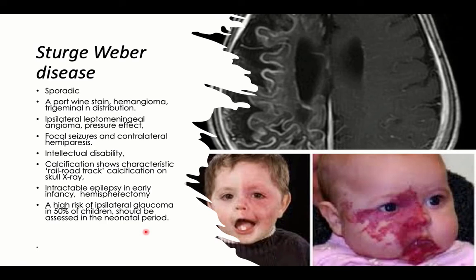The third neurocutaneous syndrome is Sturge-Weber disease, which is sporadic, not hereditary. It is usually suspected when finding a capillary hemangioma — called a port wine stain — present in the distribution of the trigeminal nerve. Once you find this capillary hemangioma, you should search for an associated ipsilateral meningeal angioma.